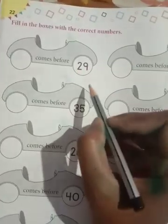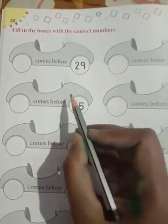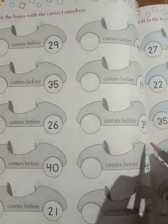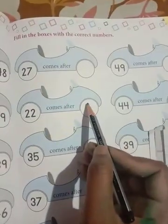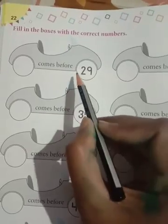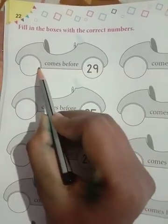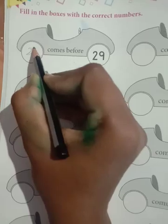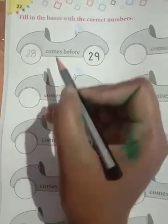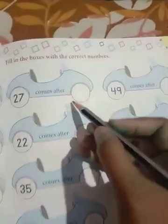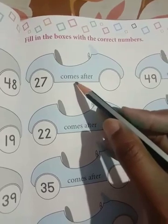This is your homework also. You have to complete comes before and comes after. Before twenty-nine which number is? Twenty-eight. I have to write twenty-eight. This is the same you have to do in the book.